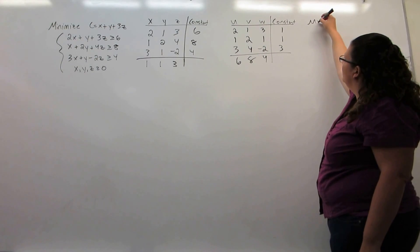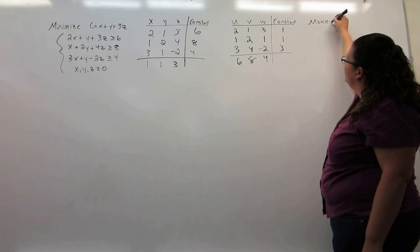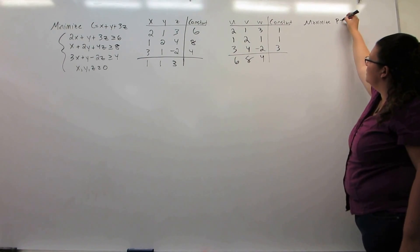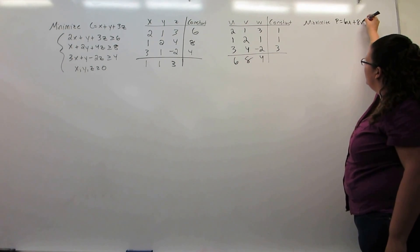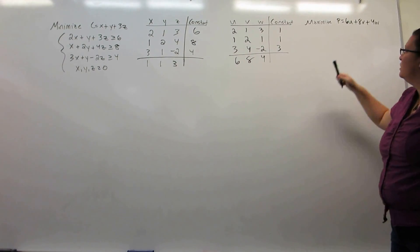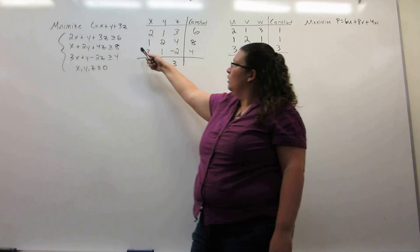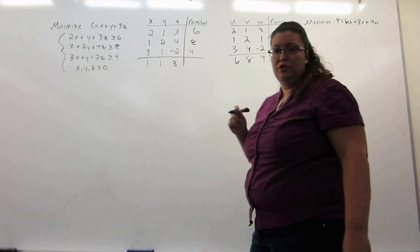Now, we translate this back. We are now maximizing the objective function 6u plus 8v plus 4w. Notice that those coefficients are the right-hand sides on the original problem.